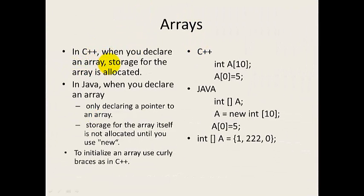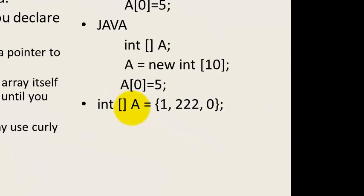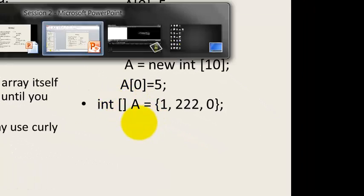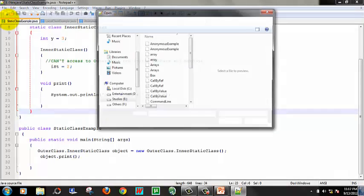Now, arrays. If you declare an array in C++, storage is allocated immediately — for example, int a[10] allocates storage space, and you can use a[0] to a[5] etc. But in Java, when you declare an array, space is not allocated immediately. You need to use the new keyword to allocate space. That is the main difference. You can also initialize an array in Java using curly braces.